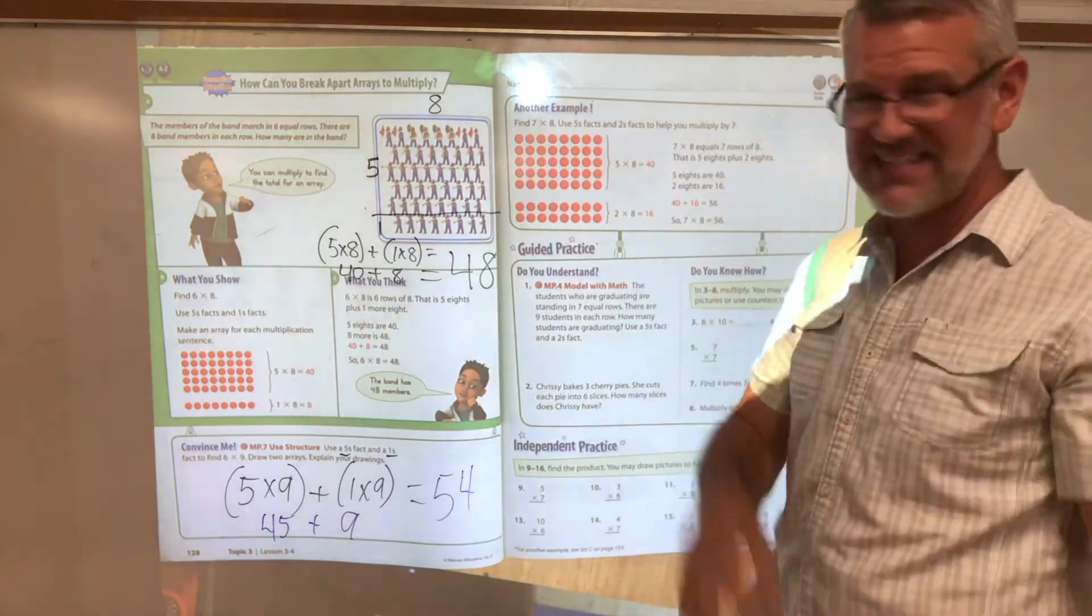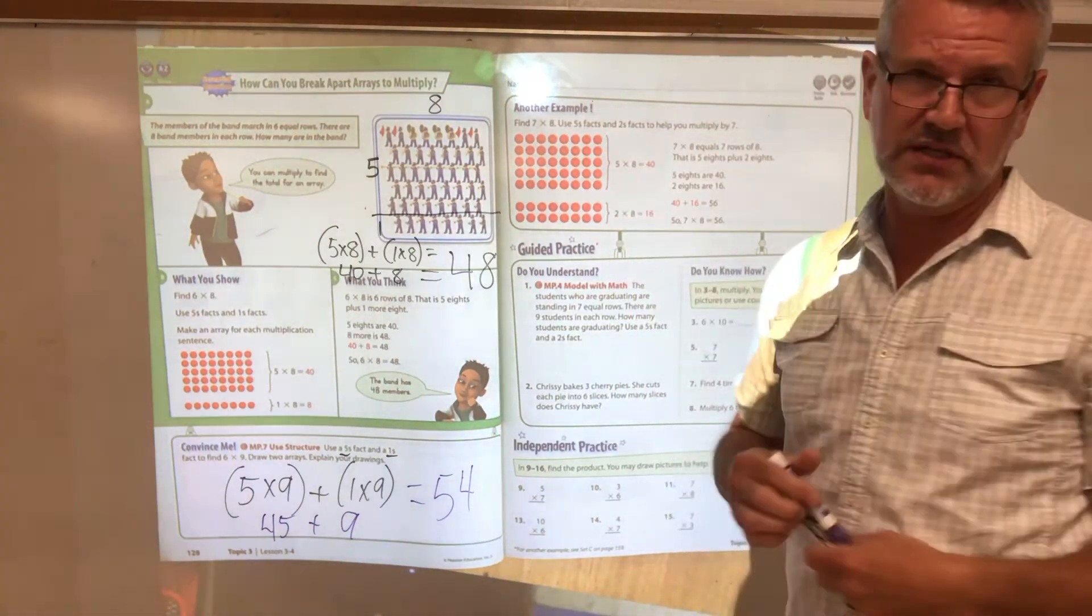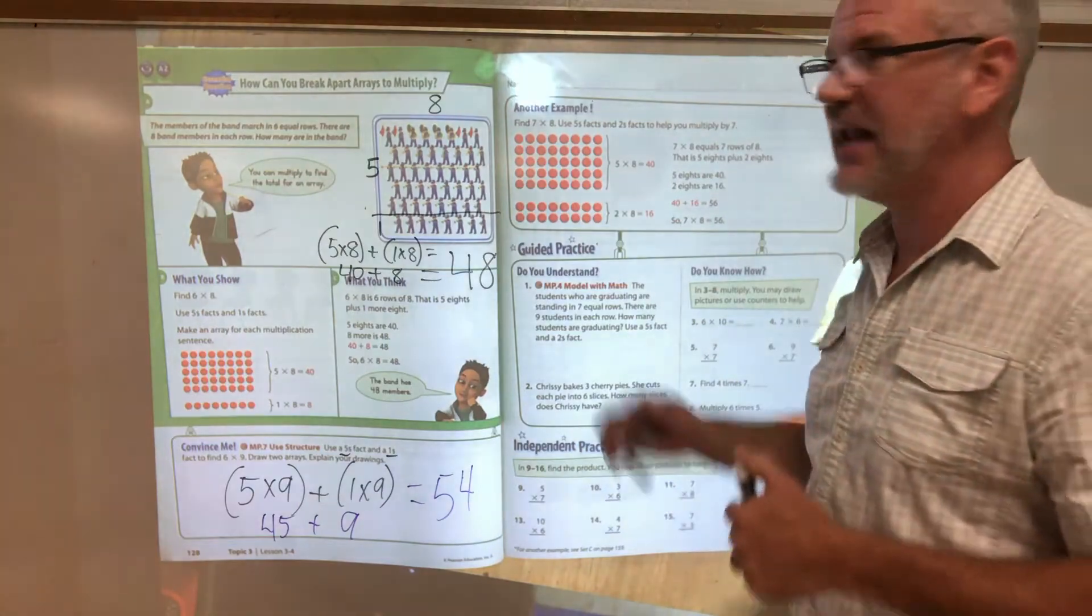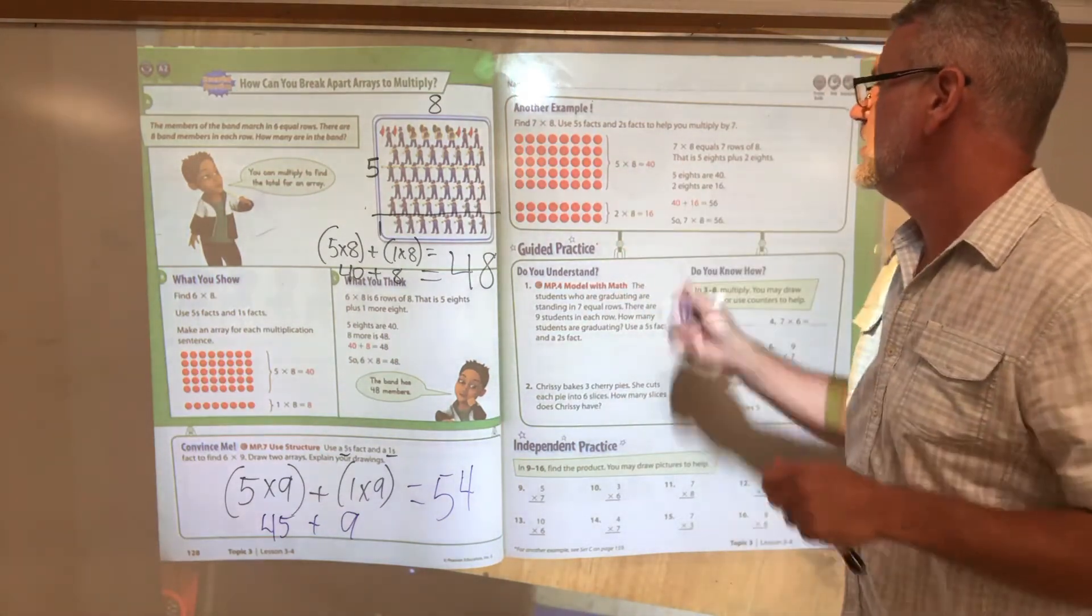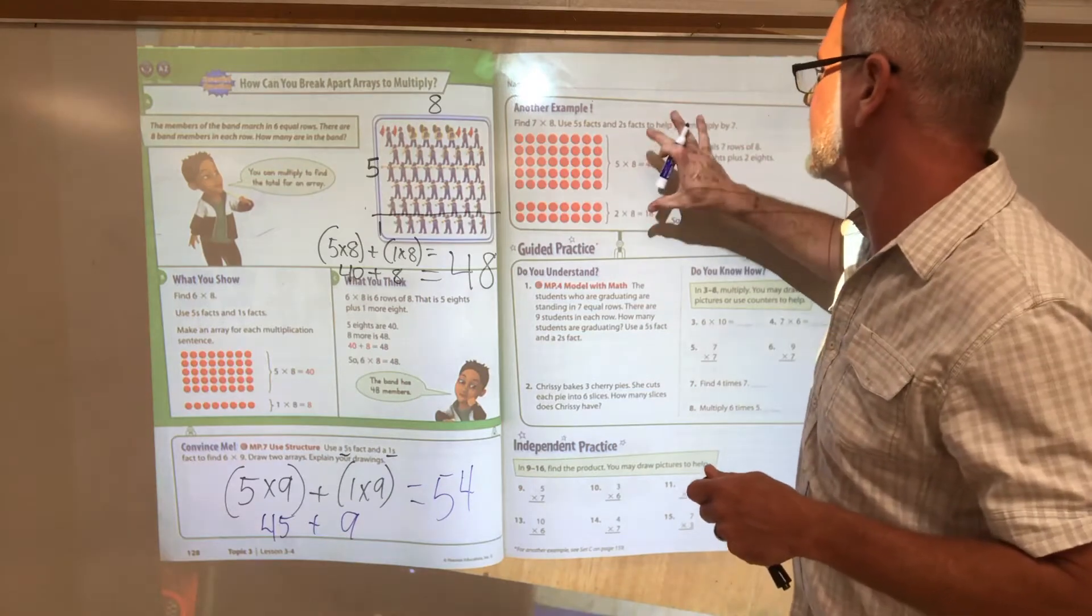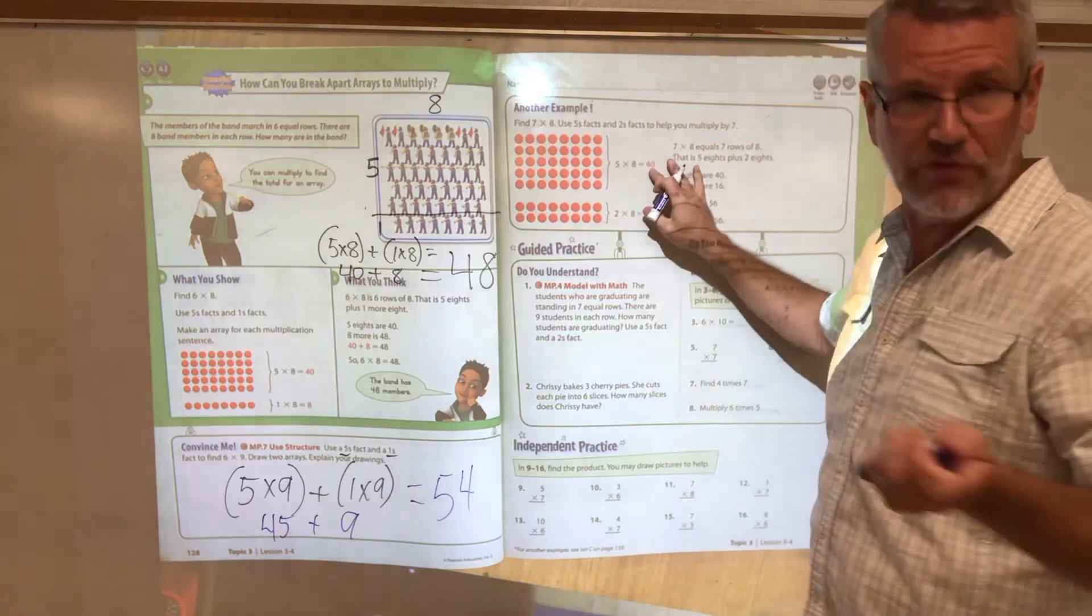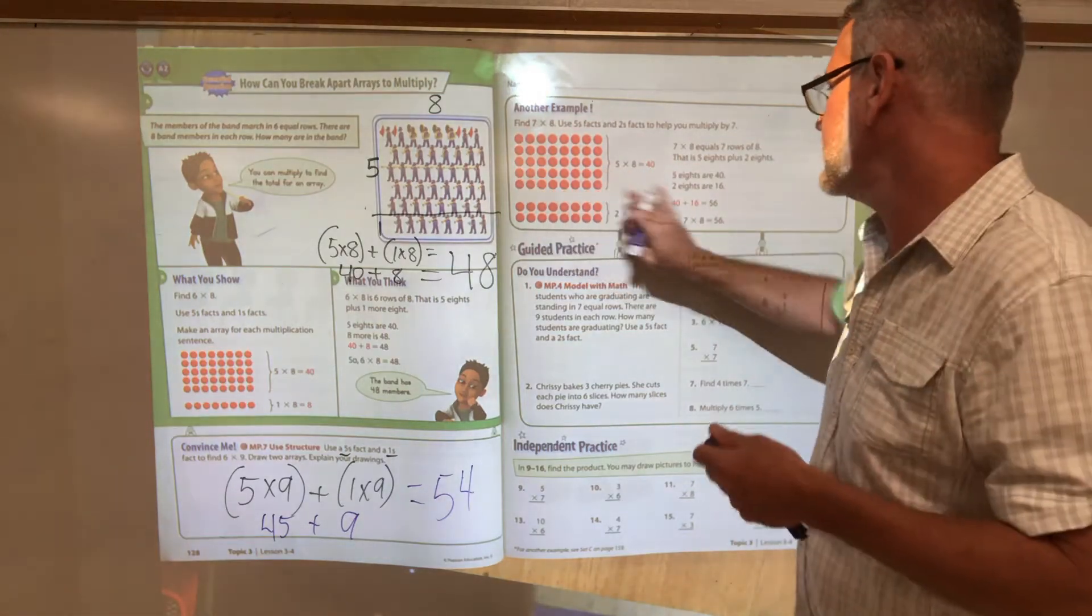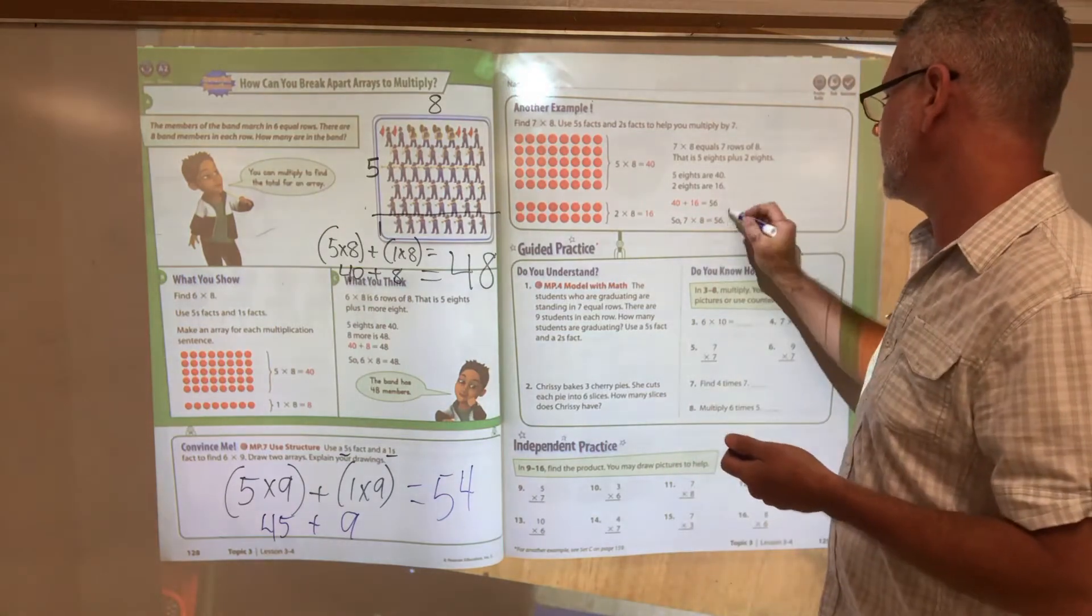Now if we had seven, sevens are good to break apart into fives and twos because five plus two is seven. I love to count by fives and I love to count by twos. So instead of looking at seven rows of eight, I'm going to break it apart and say, here's five rows of eight and that's forty. Here's two more rows of eight, that's sixteen. I'm going to put those two numbers together to get fifty-six.